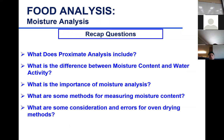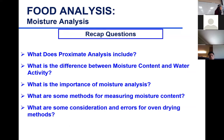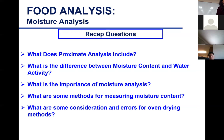What are some considerations and errors for oven drying methods? For example, if you have a high-moisture sample like milk, it might splatter. That's why it's better to put it in a water bath first to reduce the moisture content and then put it in the oven. If it's a powder material and you use a forced draft oven, it might be blown away because of the air circulation.